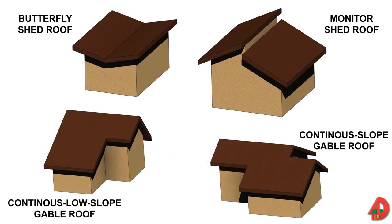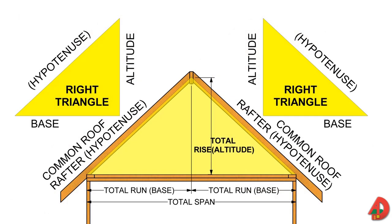Butterfly, monitor, and continuous slope roofs are other variations. These basic types of roofs can be combined in various ways to produce interesting designs. A roof that is sloped in two or more directions is formed based on two or more triangles. A shed roof is based on one triangle and a gable roof is based on two triangles.